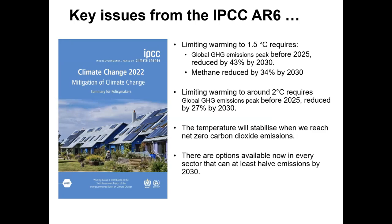The mitigation report says limiting warming to 1.5 degrees requires global greenhouse gas emissions to peak by 2025 and start reducing by 43% by 2030, with methane reduced by 34% by 2030. Limiting warming to around 2 degrees requires global greenhouse gas emissions to peak before 2025 and reduce by 27% by 2030. The temperature will stabilize when we reach net zero carbon dioxide emissions — or carbon neutrality.